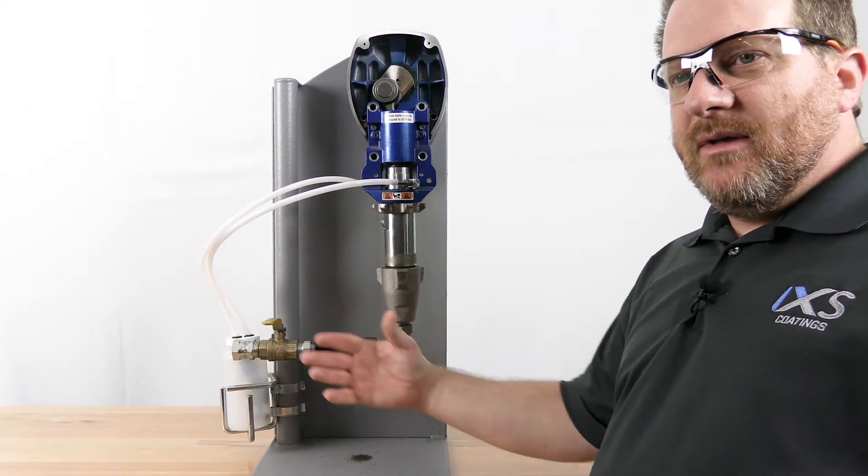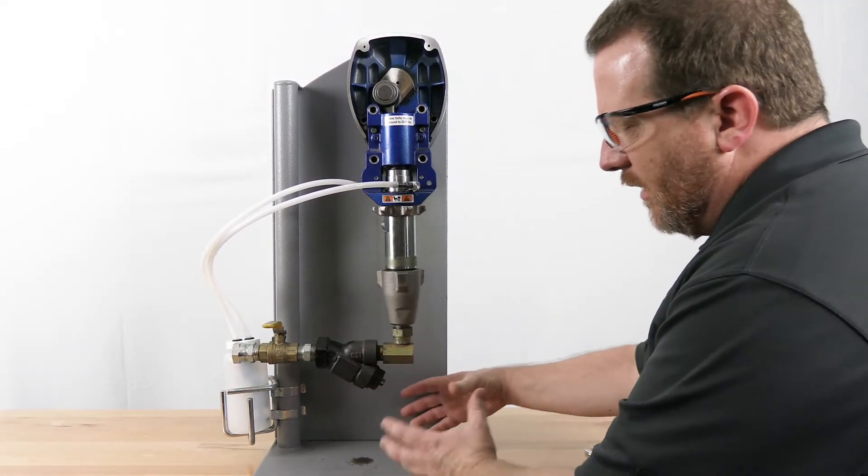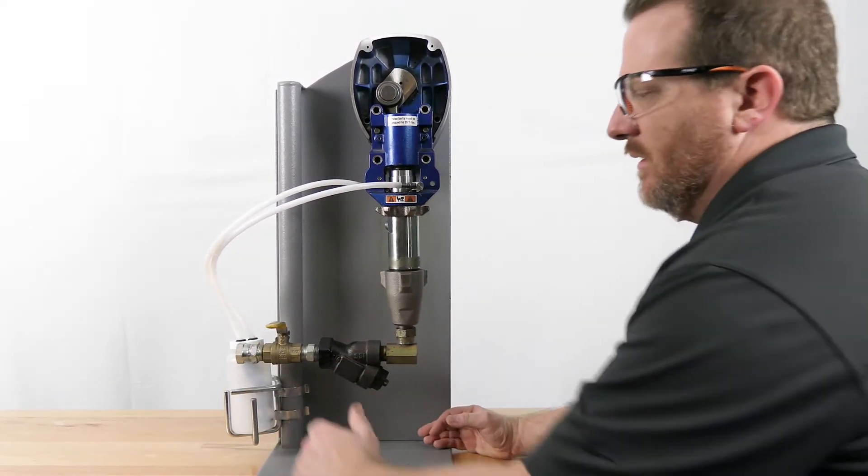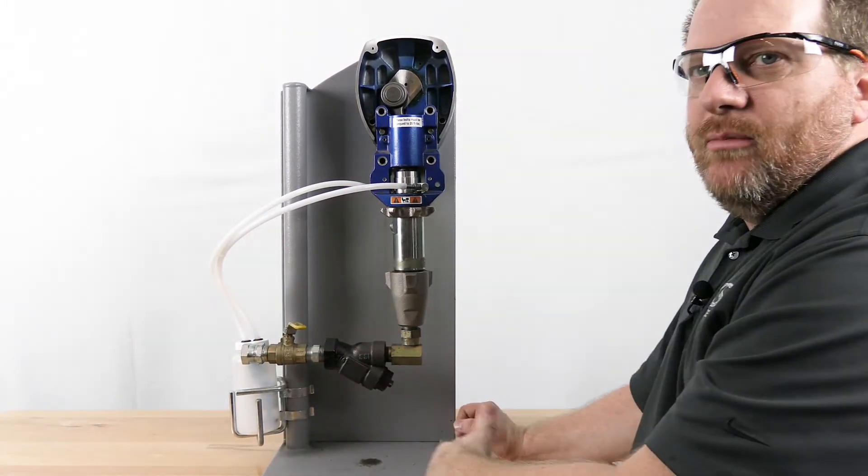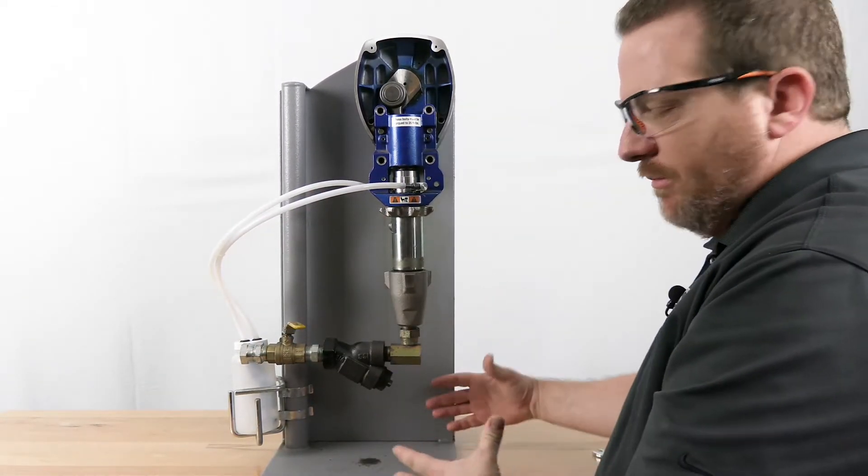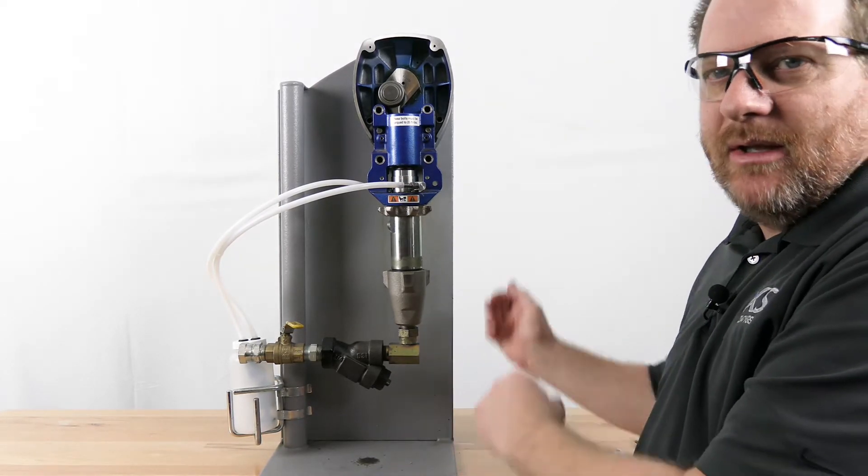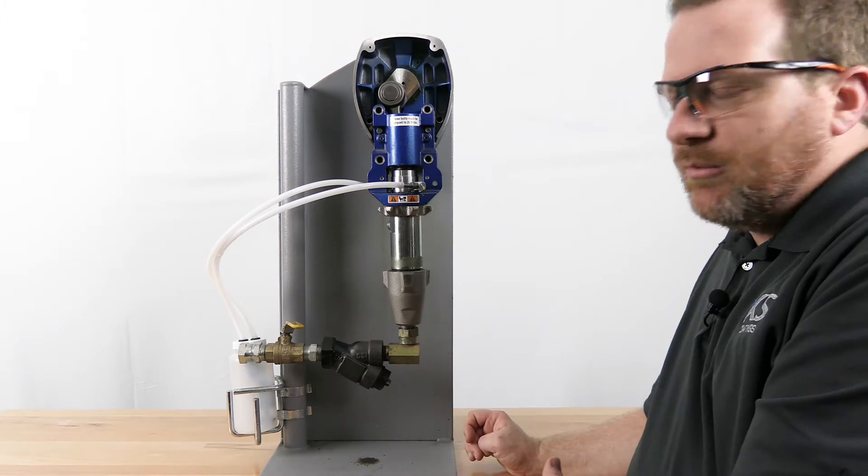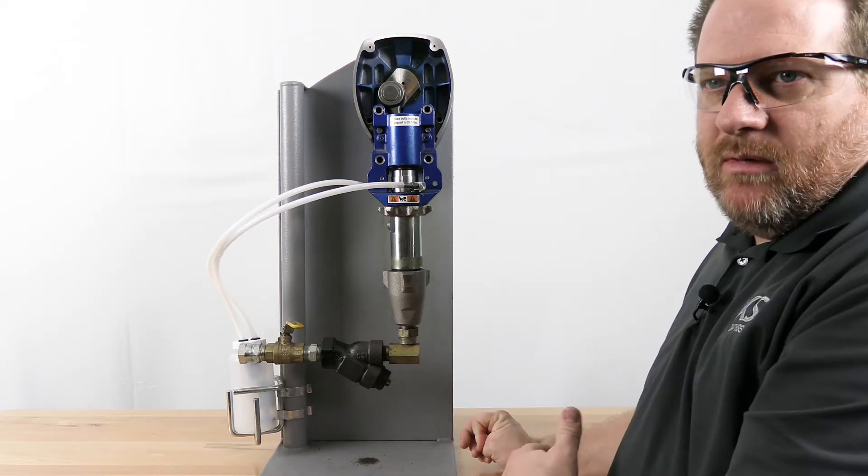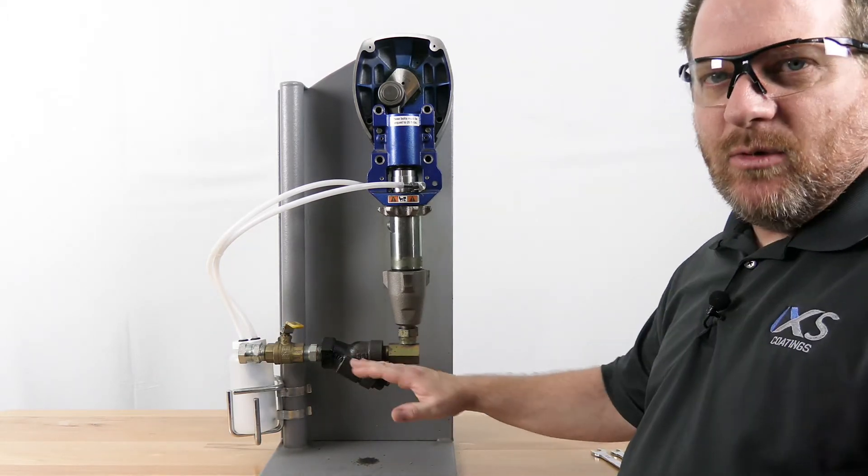If I want to verify the pump, I can take a bucket, put it underneath, plug my pump in and slowly open this valve to make sure I get flow. Pump out of the barrel into that bucket, then dump it back into the drum so you're not wasting product. That'll verify the system is working at least to this point.